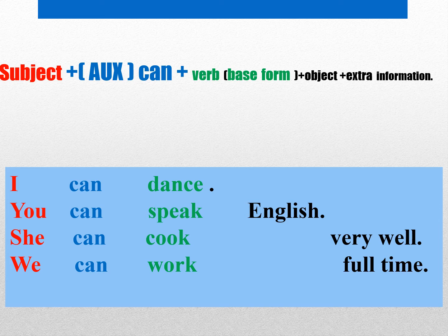'We can work full time.' پس ببینید subject سر جاشه، auxiliary سر جاشه، بعد فعل و بعد object و extra information. 'I can dance' یعنی من می‌تونم برقصم — این یه جور توانایی‌ه (ability). 'You can speak English' — می‌تونی انگلیسی صحبت کنی. 'She can cook very well' — اون خانم خیلی خوب می‌تونه آشپزی کنه (ability). 'We can work full time' — ما می‌تونیم تمام وقت کار کنیم (ability).